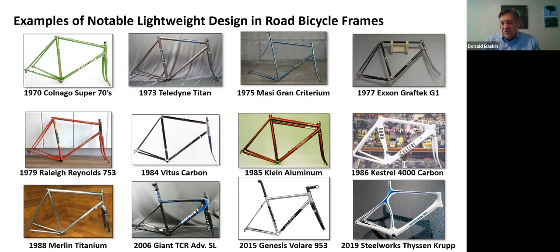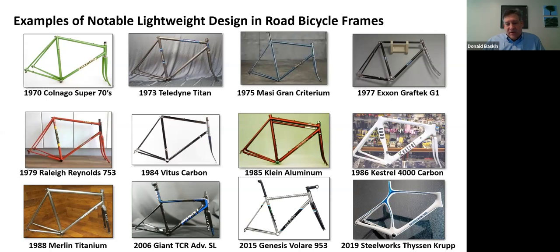In 1986, the first carbon fiber one-piece molded frame came out — by Kestrel in Santa Cruz, later bought by Trek. In the late eighties, Merlin — a Massachusetts company — made the first popular titanium frames in three versions: commercially pure titanium with bigger tubes, a 3-2.5 titanium alloy version, and the most expensive 6-4 titanium frame. These frames last essentially forever since titanium doesn't corrode. They joined the tubes using TIG welding. Merlin eventually became Seven Cycles, now in Watertown, Massachusetts.